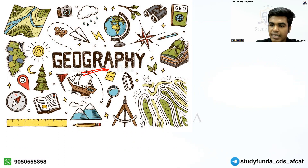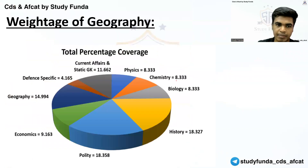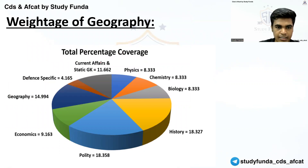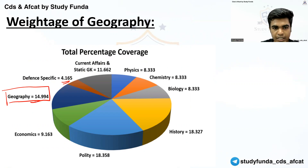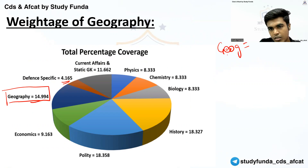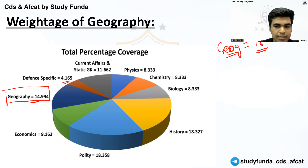Let's see, first of all, what is the weightage of our examination. This is our common weightage across various subjects of the CDS exam. If we focus specifically on geography, you can get 15 marks, with around 20 to 22 questions from geography.